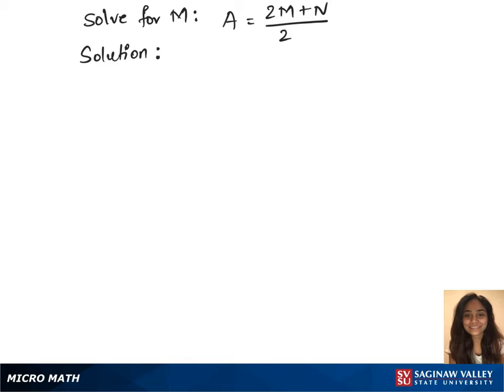To solve this question, we will first multiply 2 on both sides, which gives us 2a on the left equals to 2m plus n on the right. In our next step, we'll subtract n on both sides, which gives us 2a minus n on the left equals to 2m on the right. We are solving for m.